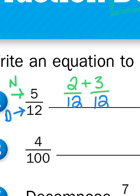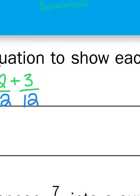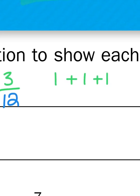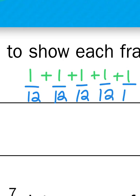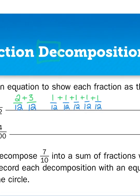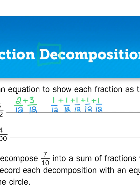Another way we can think about 5 twelfths is that 5 is simply 5 ones — in other words, 1 plus 1 plus 1 plus 1 plus 1, five ones. If those ones are representing twelfths, I would put my denominator under each one. That gives me another equation showing how to get to 5 twelfths by adding 5 sets of 1 twelfth together.